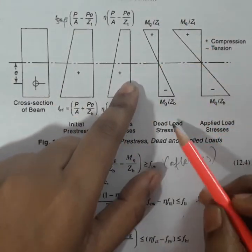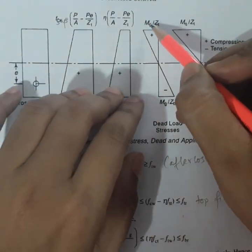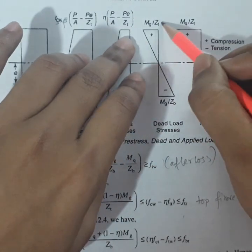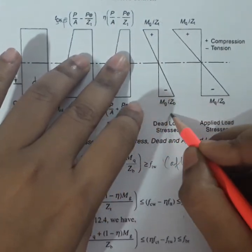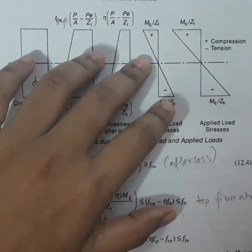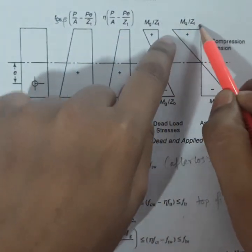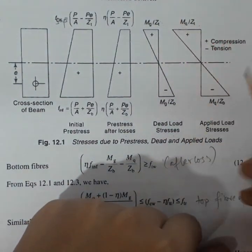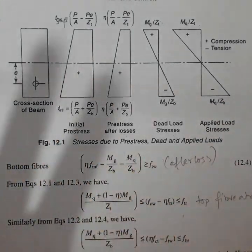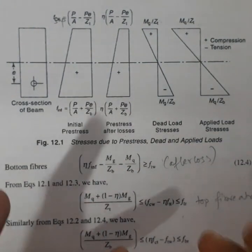This diagram represents the dead load stresses at the top fiber and bottom fiber, where Mg represents the moment due to gravity load, Zt is the section modulus at the top fiber, and Zb is for the bottom fiber. Similarly, this is the live load or imposed load stress diagram, representing the top fiber stress and bottom fiber stress.